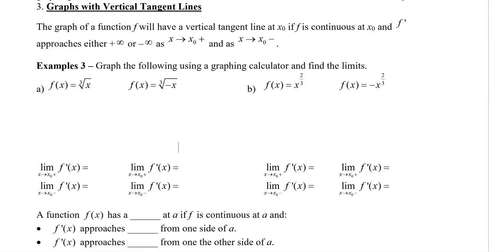Let's graph the following using a graphing calculator and then we can find the limits. When we graph these, you will notice that the cube root of x looks something like this. And then the cube root of negative x — the negative means that we actually reflect over the y-axis — you'd have a graph that looks something like this.